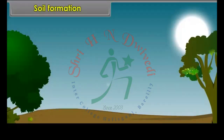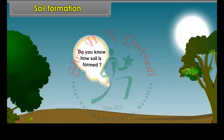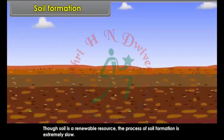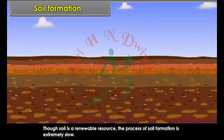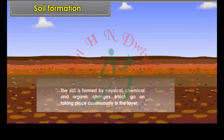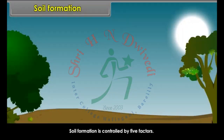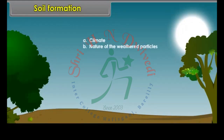Soil Formation. Though soil is a renewable resource, the process of soil formation is extremely slow. The soil is formed by physical, chemical and organic changes, which go on taking place continuously in the layer. Soil formation is controlled by five factors: climate, nature of the weathered particles, topography, time and soil profile.